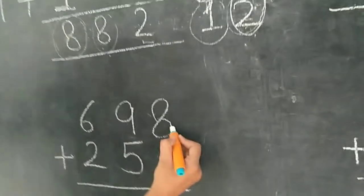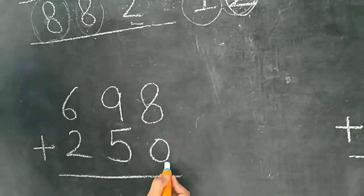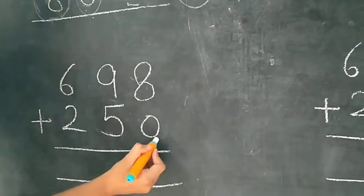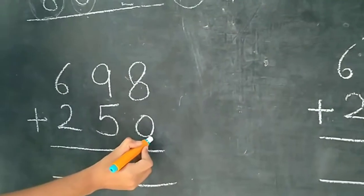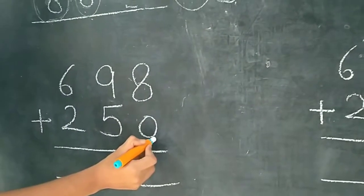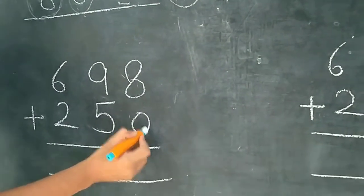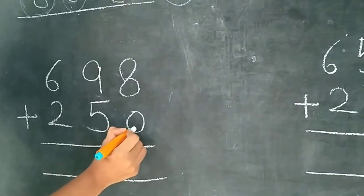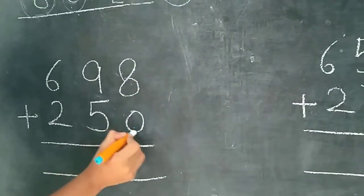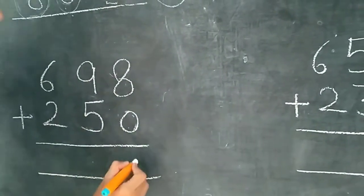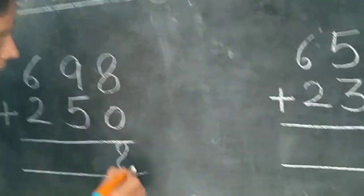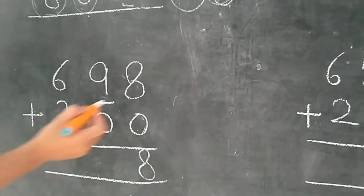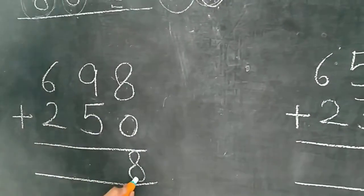8 mein 0 add karna hai. 0 means nothing. 8 mein jab aapne kuch bhi count nahi kiya — 0 count ki — so the answer is 8.